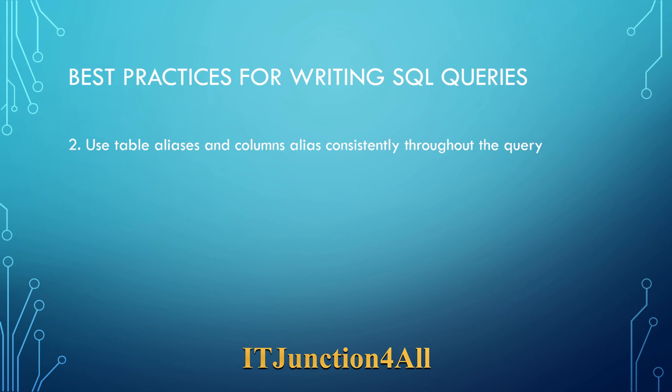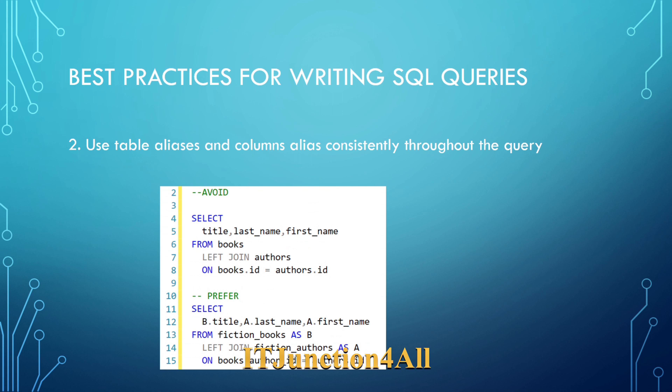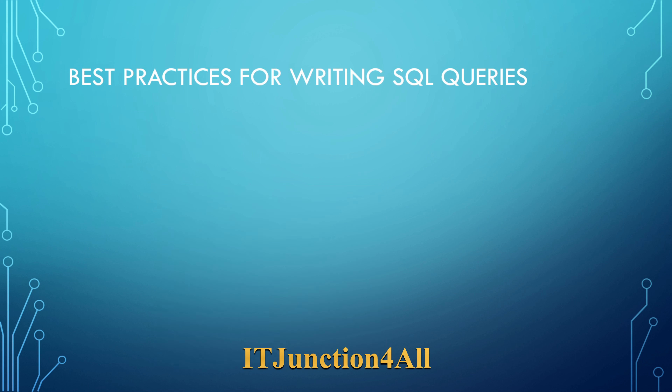The second point: use table aliases and column aliases consistently throughout the query. You can see the avoid query and the prefer query. You can use aliases for both columns and tables, giving short and meaningful names. Aliases are particularly useful when the same column names are present in multiple tables, as it helps to avoid ambiguity errors.